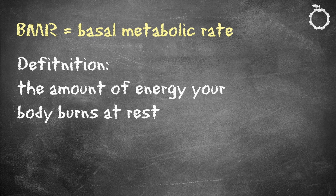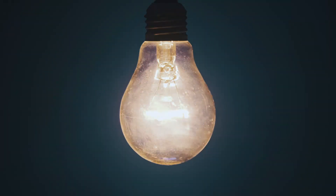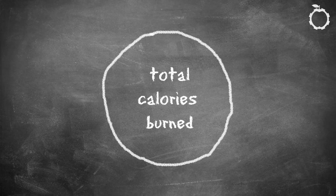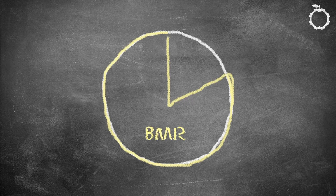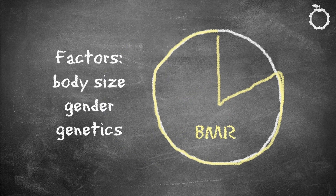Base metabolic rate, or BMR, is the number of calories your body burns daily, excluding activity and exercise. Think of it as the minimum energy required to keep the lights on. Surprisingly, your metabolism typically burns 60-80% of your daily calories, but everybody's metabolic rate differs depending on your body size, gender, and genetics.